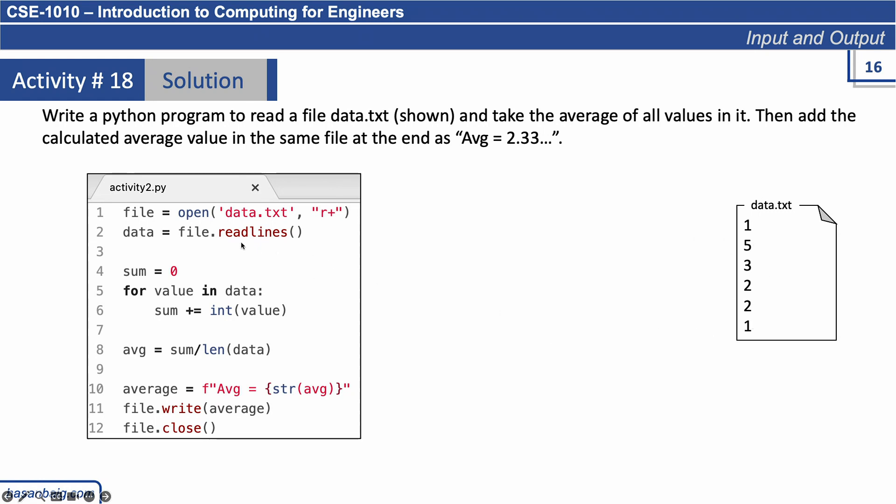Once we use this method readlines, it will fetch all the elements and put them in a list called 'data', and every element is now a list element separately. But the problem here is that the data contains the list of all the elements, but all of them are of string type.